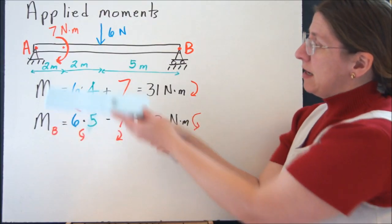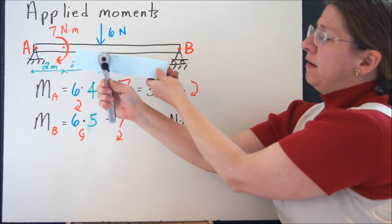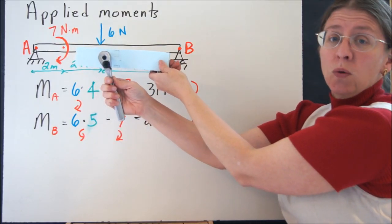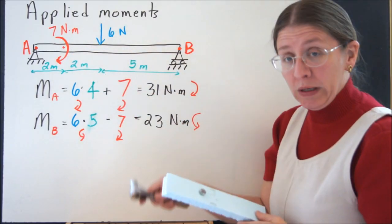So it's as if some giant were standing here with a torque wrench right there, or some other kind of wrench on that bolt, and was trying to turn your whole beam at that point.